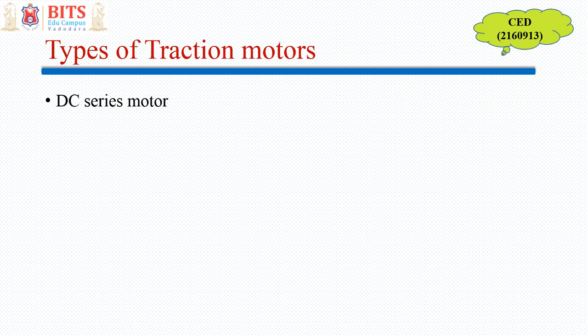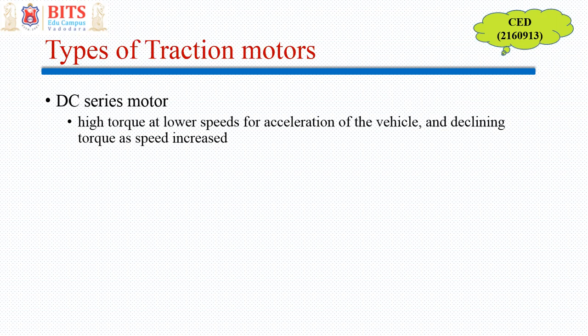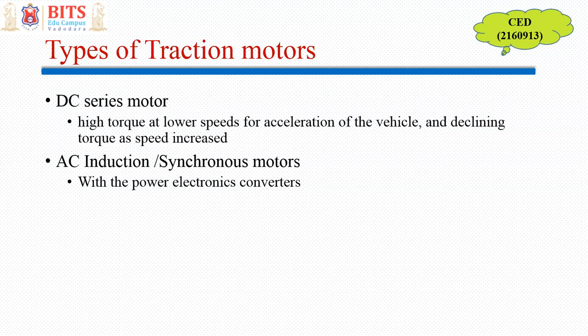Types of traction motors: DC series motors, with their hyperbolic speed-torque characteristics and high starting torque, were the best option for earlier electric locomotives. However, due to maintenance issues, DC series motors are now being replaced with AC induction or synchronous motors. With high-rating power electronic converters and modern control algorithms, we can control induction or synchronous motor drives just like DC series motors, imparting the required characteristics. All modern locomotives now mostly use AC traction motor drives.